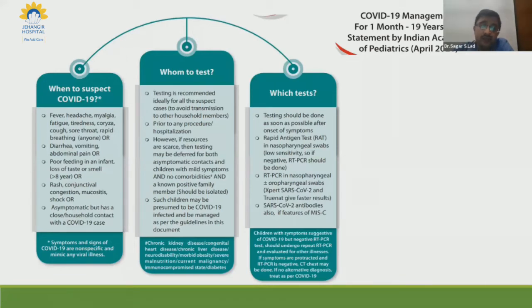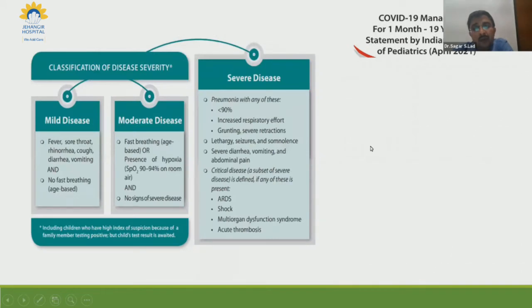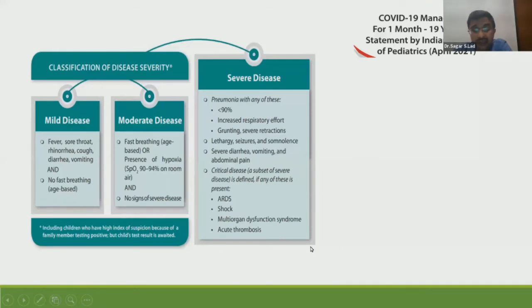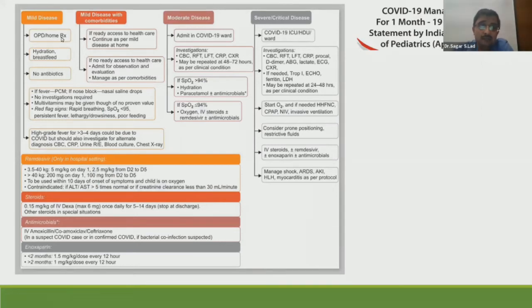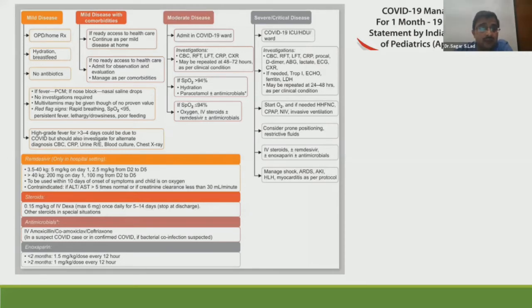As per IAP, disease is classified as mild — with mild fever, sore throat, rhinorrhea, cough, and no fast breathing — and can be managed at home with hydration, continued breastfeeding, paracetamol, nasal saline drops, and multivitamins. No antibiotics are indicated. However, if the child has persistent fever for more than three to four days, even if initially labeled mild, the child may progress to moderate disease and will need further evaluation if not settling.